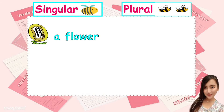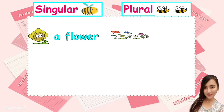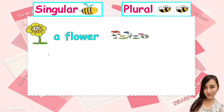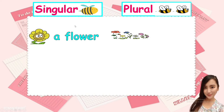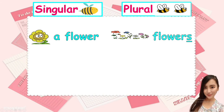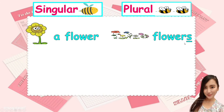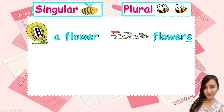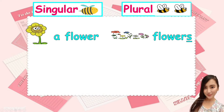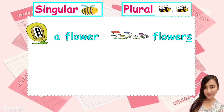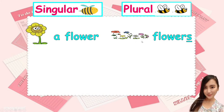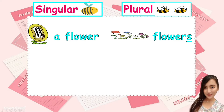For example, a flower. As you can see, there's only one, so we say a flower. This is singular. Next, we have flowers. This is plural because there are six flowers — one, two, three, four, five, and six. So this is plural because there are many.